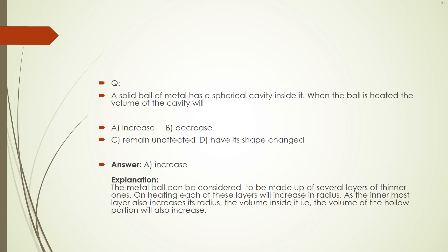A solid ball of metal has a spherical cavity inside it. When the ball is heated, the volume of the cavity will A increase, B decrease, C remain unaffected, D, have its shape changed. The correct answer is A, increases. The metal ball can be considered to be made up of several layers of thinner ones. On heating each of these layers will increase in radius as the innermost layer also increases. Its radius, the volume inside it, that is the volume of the hollow portion will also increase.